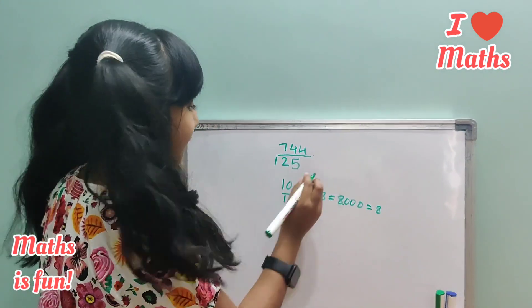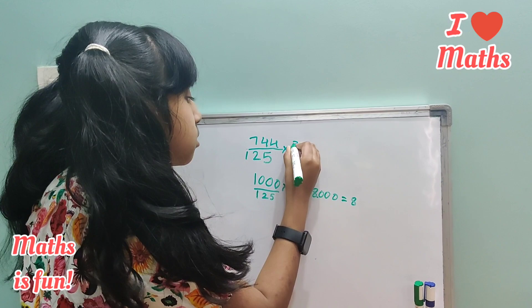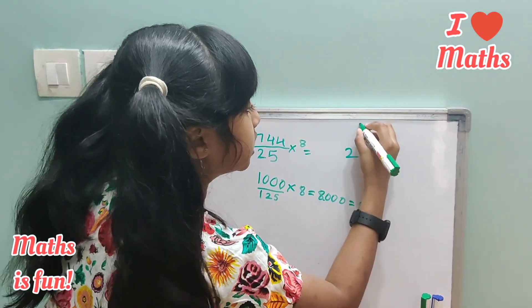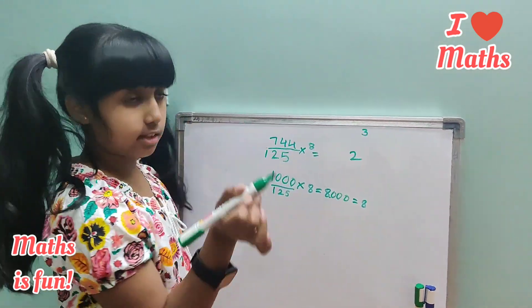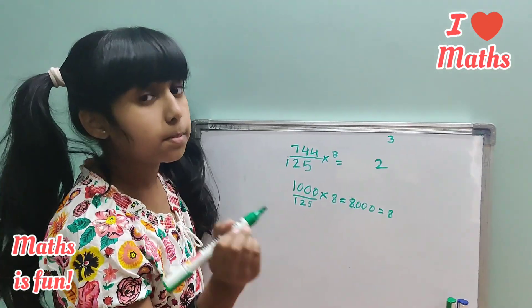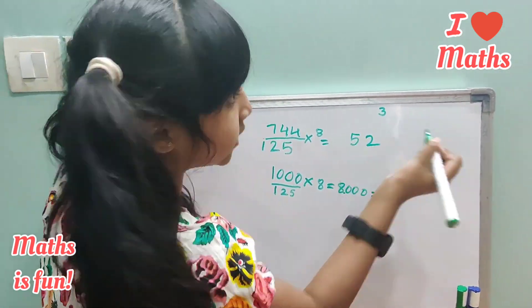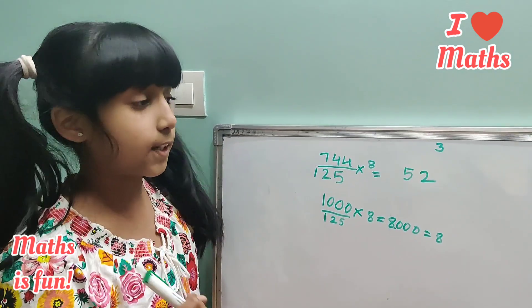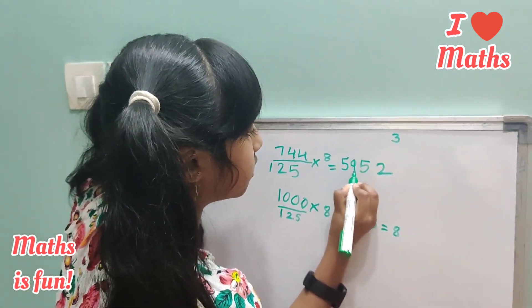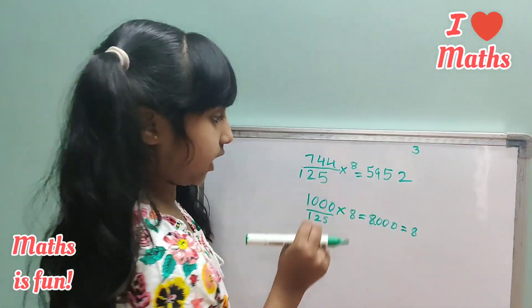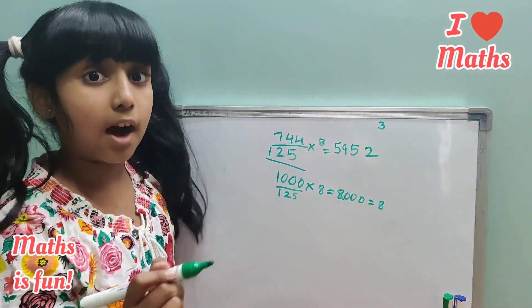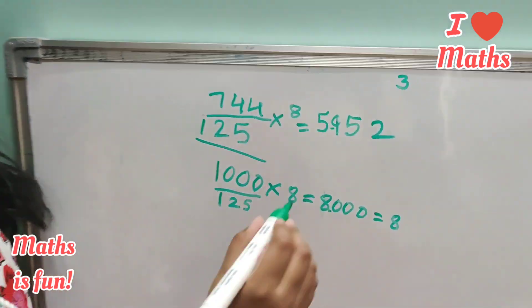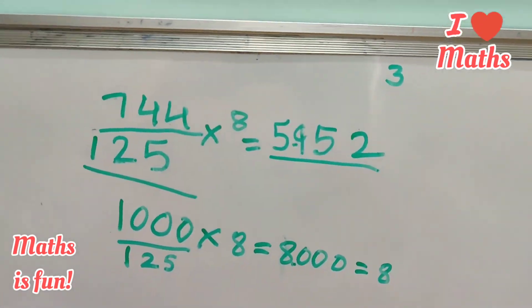Let's use it for 744 divided by 125 as well. Multiply 744 by 8: 8 times 4 is 32 — write 2, carry 3. 8 times 4 is 32 again, plus 3 carry is 35 — write 5, carry 3. 8 times 7 is 56, plus 3 carry is 59 — write 59. That gives us 5952. Now, three-digit number, so after 3 digits the decimal mark will come. The answer is 5.952.